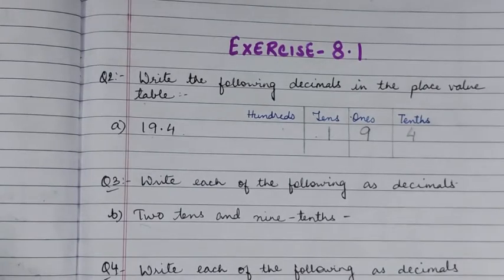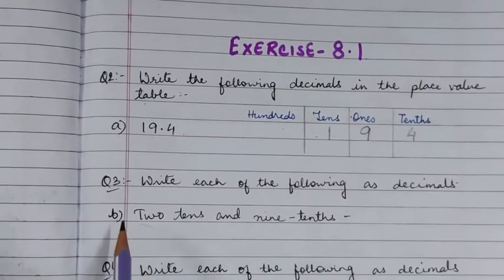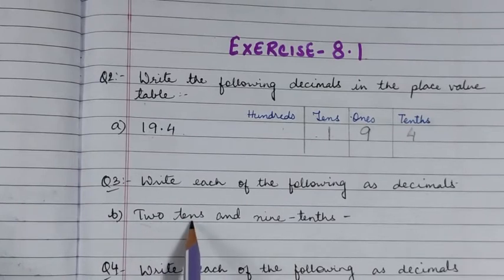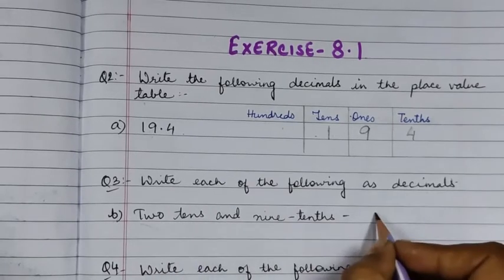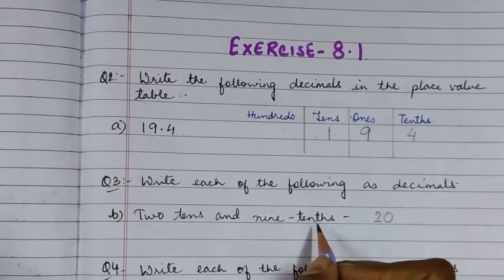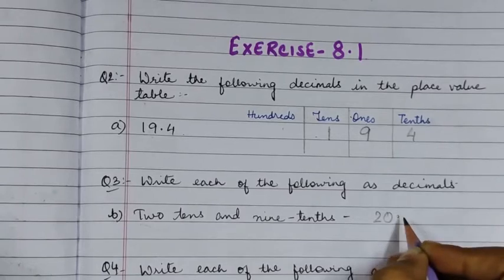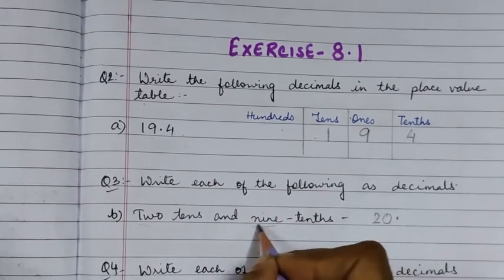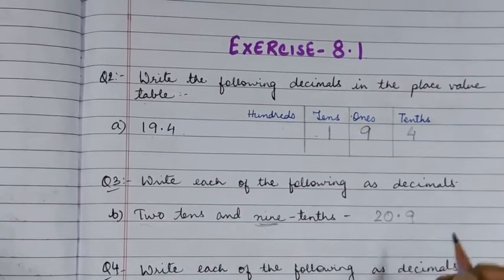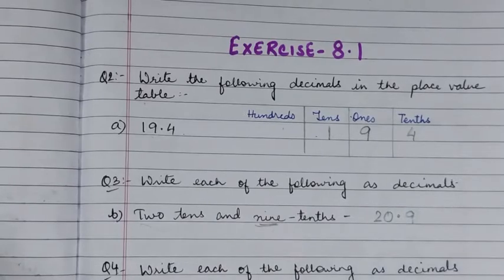Question 3 says: write each of the following as decimals. For number (b), we have two tens and nine tenths. Two tens means twenty. Tenths is the first place after the decimal, so we give a decimal point and write 9 after it. The answer is 20.9.